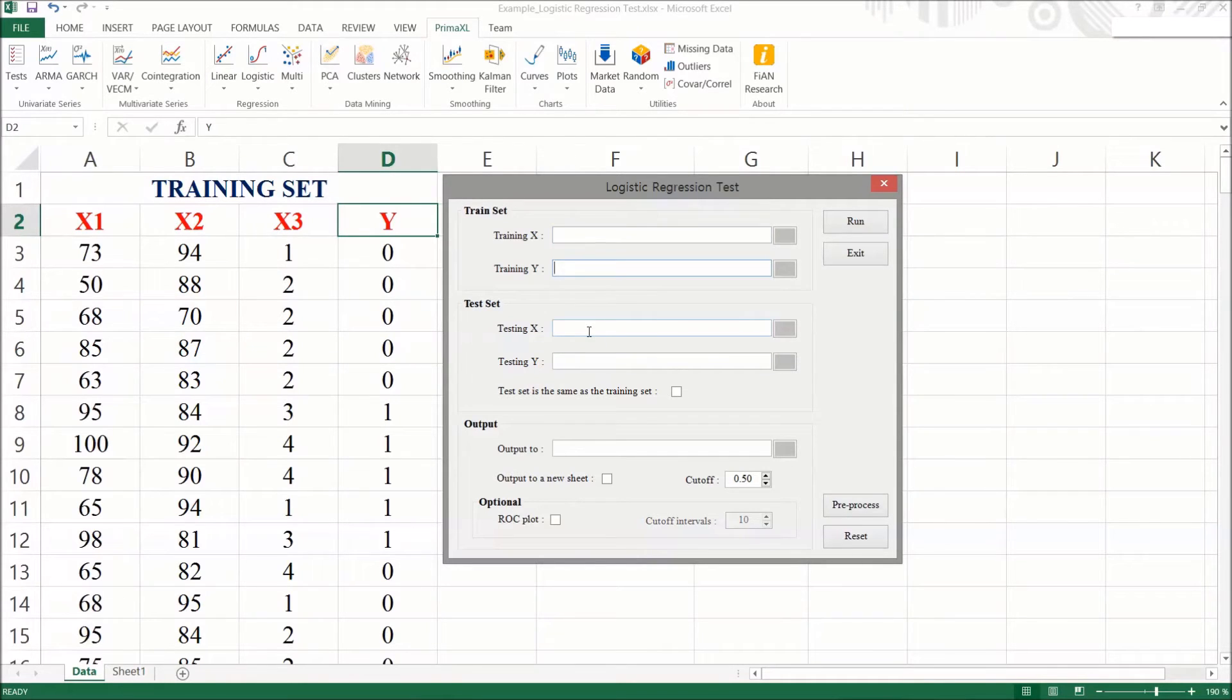we should give the set ranges of the training data set, both for x and y. Next, we should give the set ranges of the testing set. However, as we mentioned, we'll do in-sample testing. So, we check on this box which says test set is the same as a training set. Finally, we should specify the location of the result output.